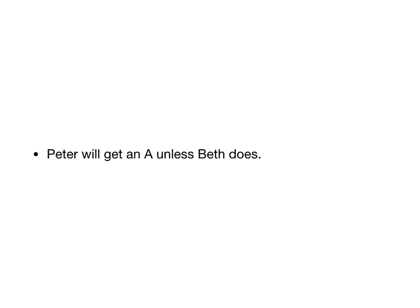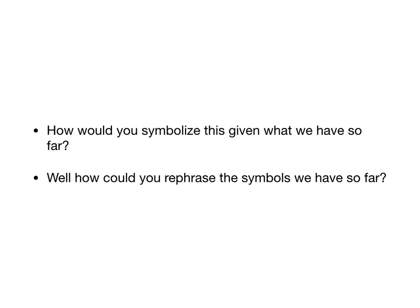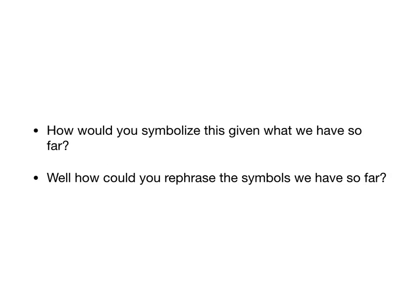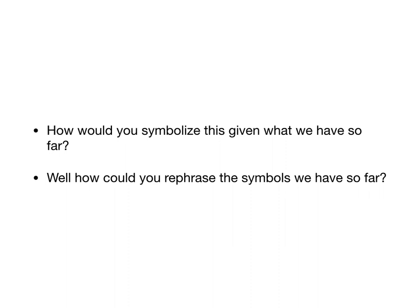The two people with the highest grades are Peter and Beth. You might say: 'He'll get an A unless she does' — Peter will get an A unless Beth does. Now, how would you symbolize that? We don't have any connective for 'unless,' but we can rephrase it to use the arrow symbol. The most natural rephrasing uses an if-then statement.